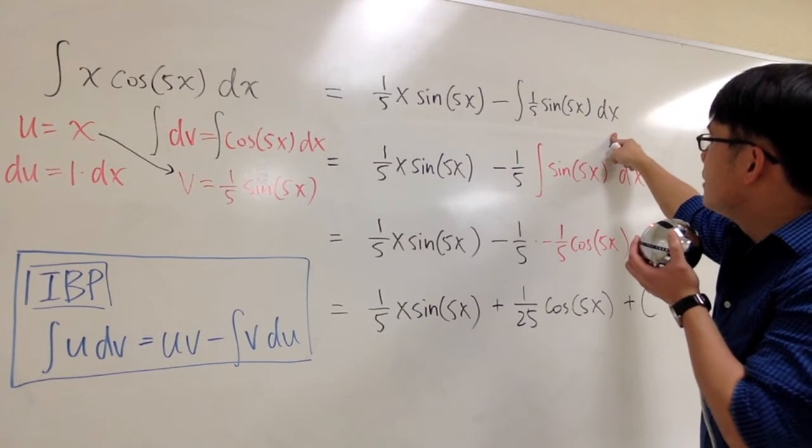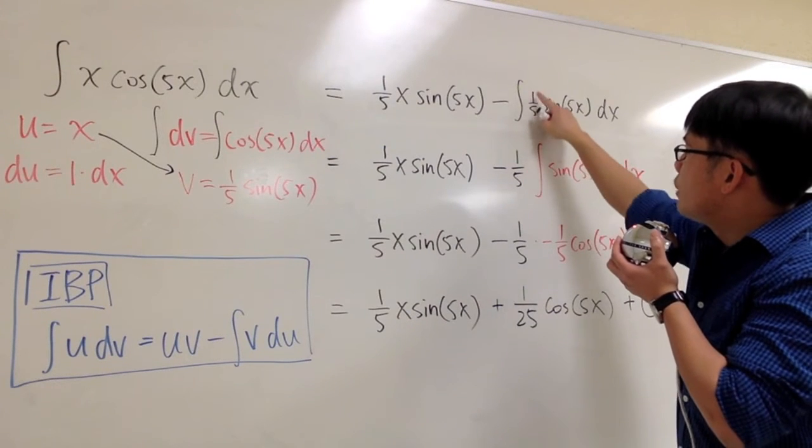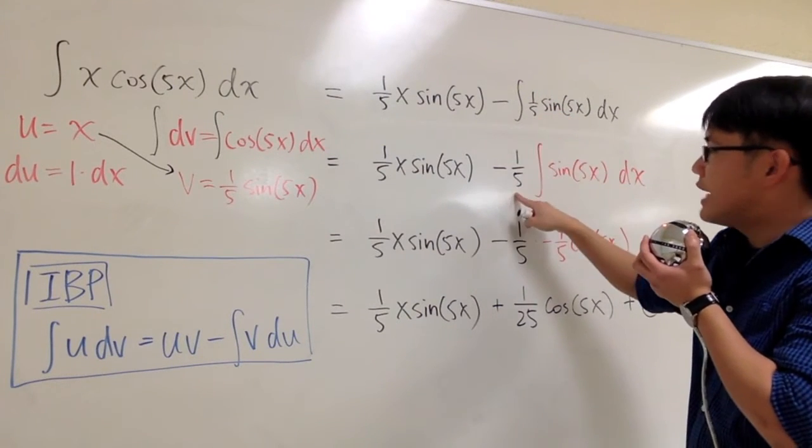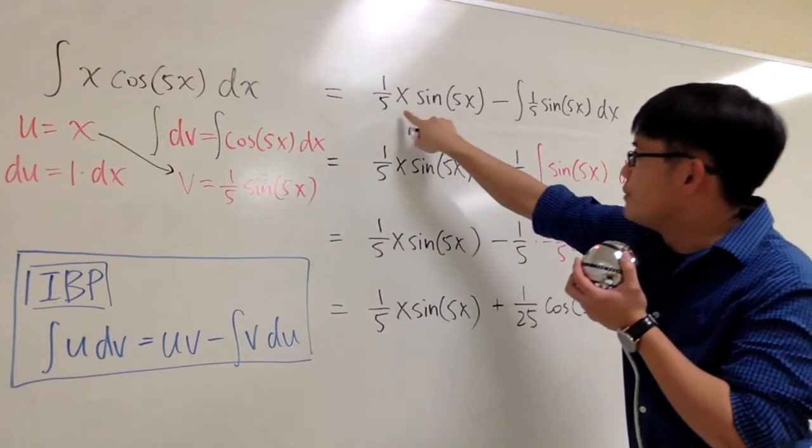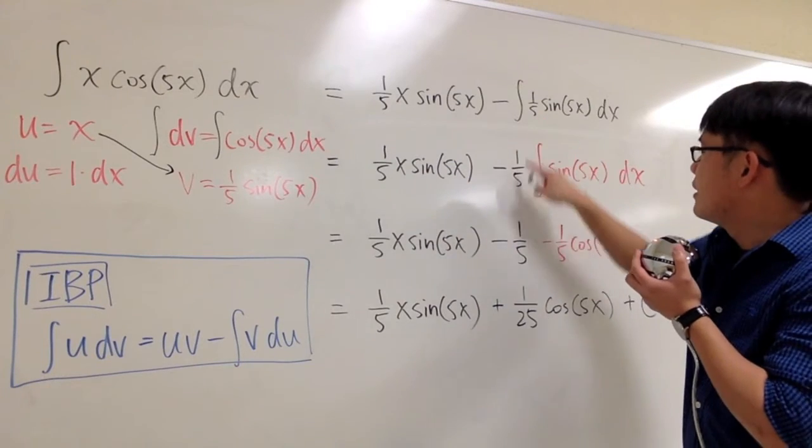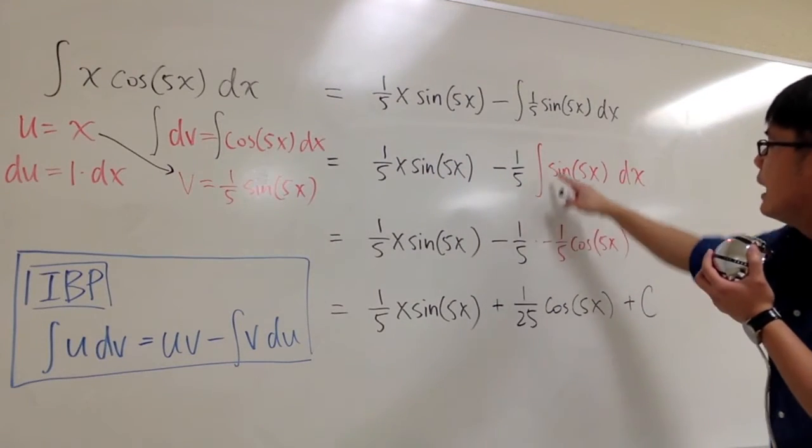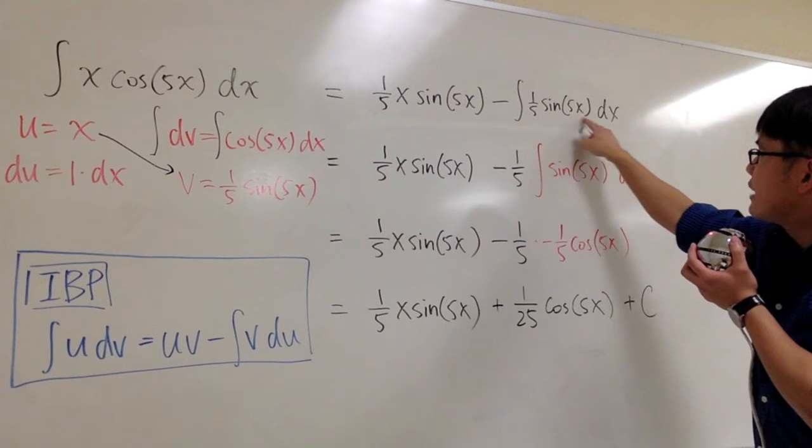But this is not that bad, because this is just a number, 1/5. I can take the 1/5 outside. And then, I'm pretty much just rewrite this like a couple more times. So I'll just copy this down right here. But then I take out the 1/5. I'm just looking at the integral of sine of 5x.